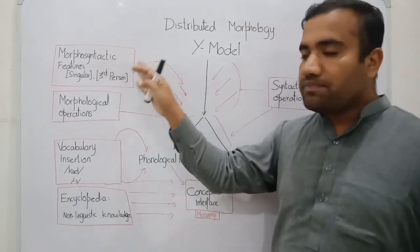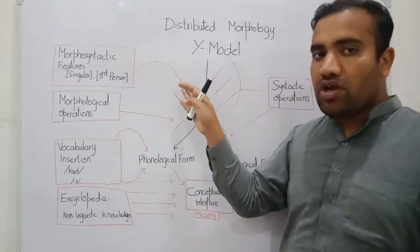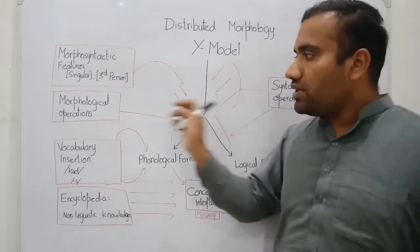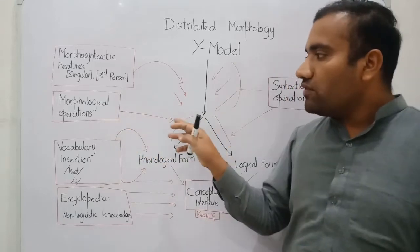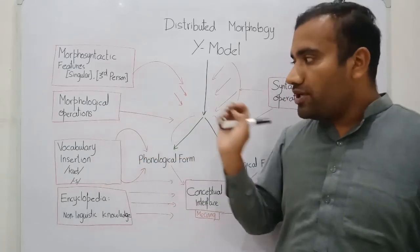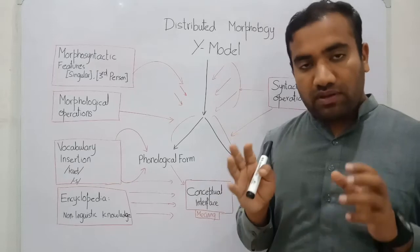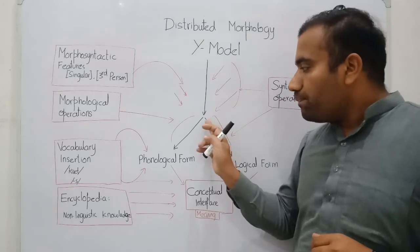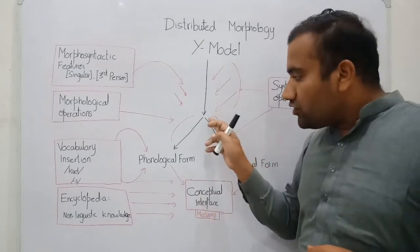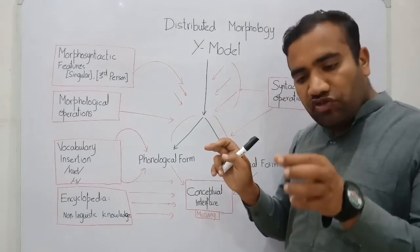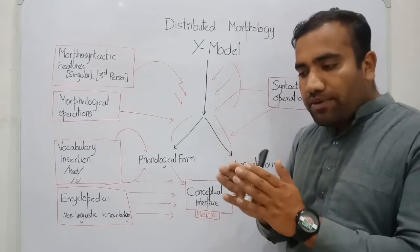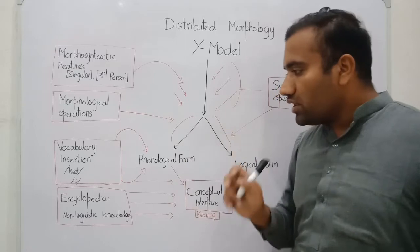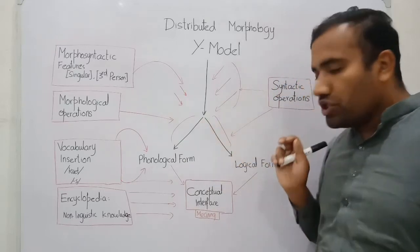From that level we have some features, and on those features we will apply the syntactic operation. Then at this level we have morphological operations. If we apply the morphological operation on the word, then the next step follows. At this level the derivation will be separated into two layers.